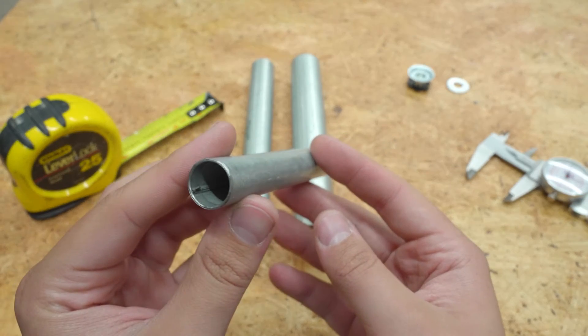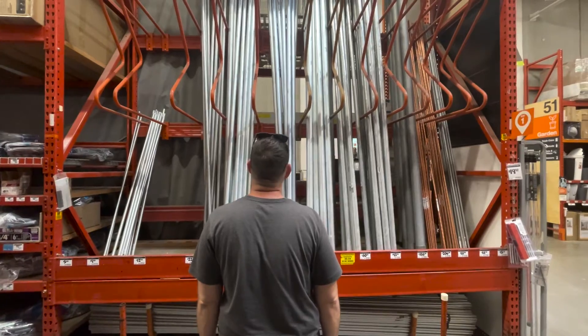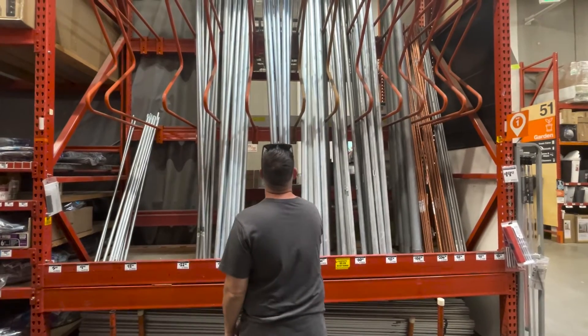Galvanized steel conduit is a commonly available pipe that you can find in Ace Hardware, Home Depot, Lowe's, and places like that.